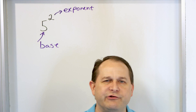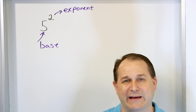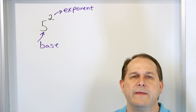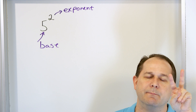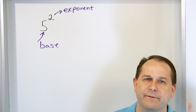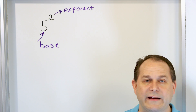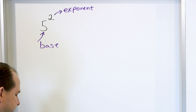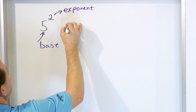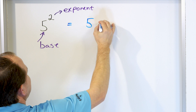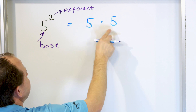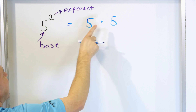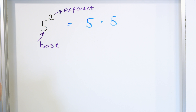Exponents are really just shortcuts for writing multiplications. So when we write five to the power of two, that means it's five times five. We multiply the five times itself and we have two of them because we're raising it to the power of two. So five to the power of two is really equal to five multiplied by five. Notice there's two of them, and the reason we have five multiplied twice is because there is a two in the exponent.